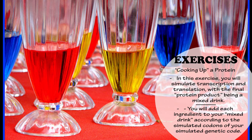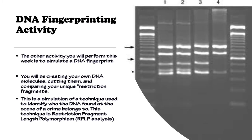The exercises this week include an activity called "cooking up a protein." In this exercise, you will simulate transcription and translation with the final protein product being a mixed drink. You will add each ingredient according to the simulated codons of your simulated genetic code. You will also do a DNA fingerprinting activity, where you create your own DNA molecule, cut it up, and compare your unique restriction fragments with your classmates. This simulates a technique called Restriction Fragment Length Polymorphism Analysis, used to identify who the DNA found at a crime scene belongs to.